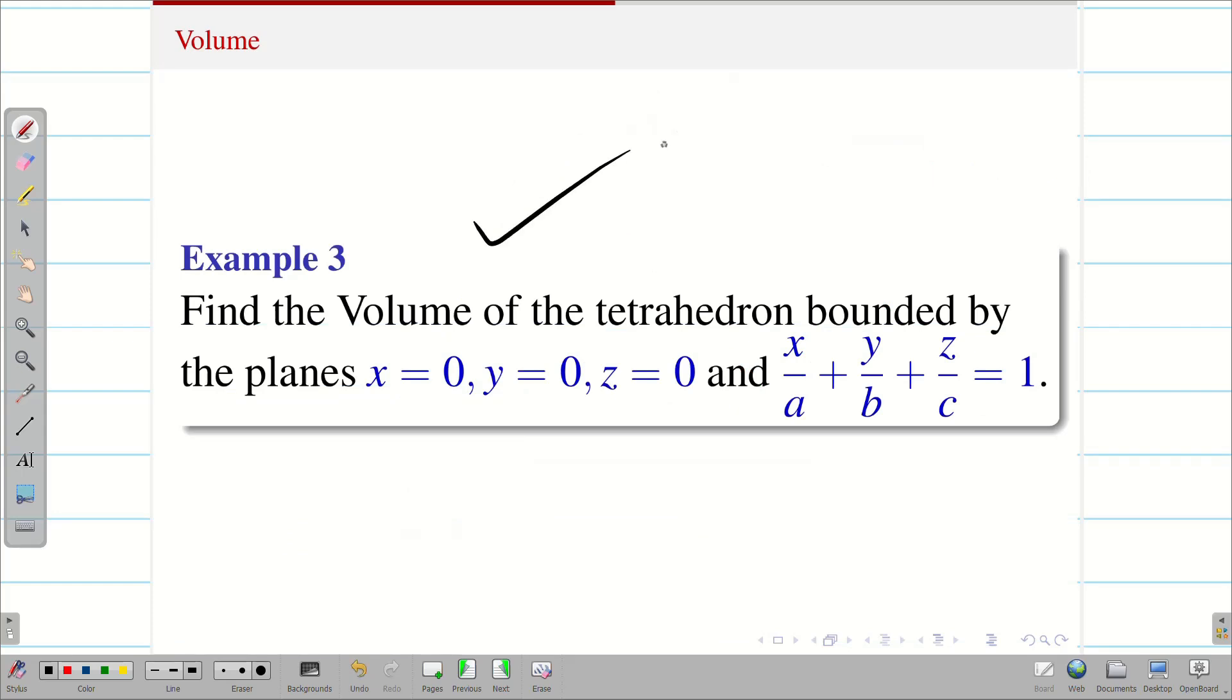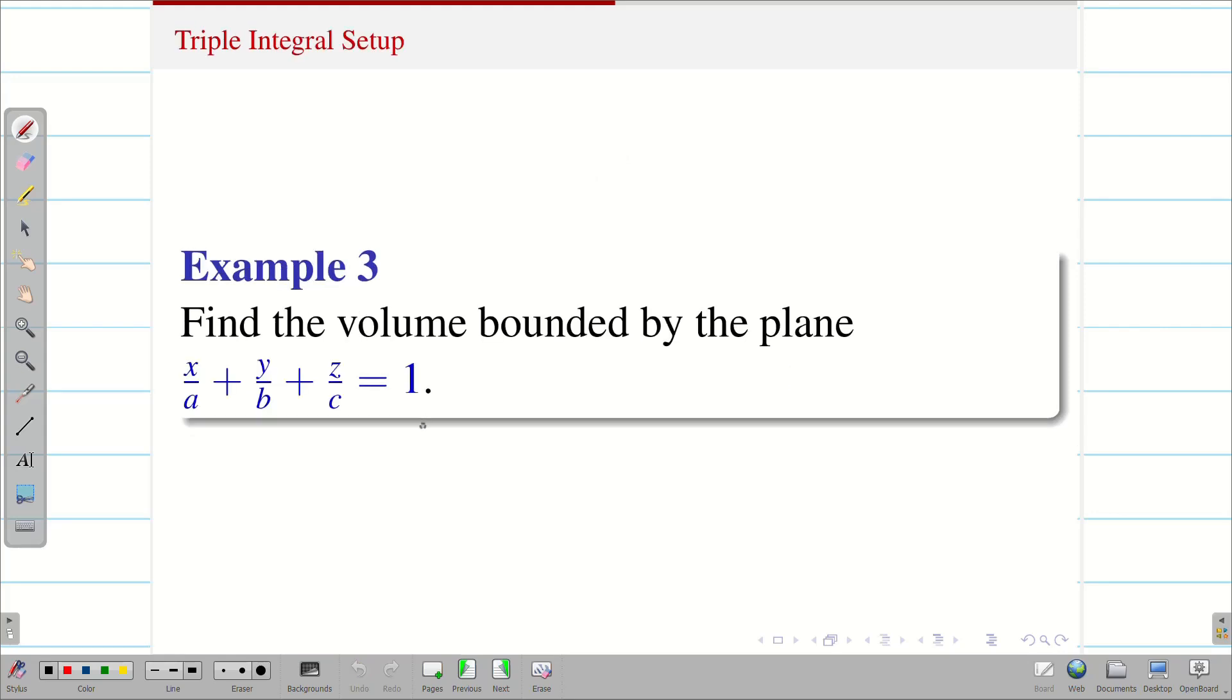They can ask the question like this also: find the volume of the tetrahedron bounded by the planes x equal to 0, y equal to 0, z equal to 0 and the equation, or they will simply give find the volume of the tetrahedron. Sometimes, they can give find the volume bounded by the plane x by a plus y by b plus z by c equal to 1. All these three questions represent the tetrahedron.